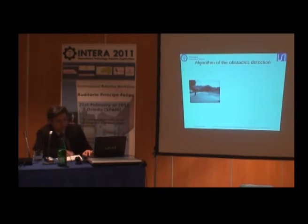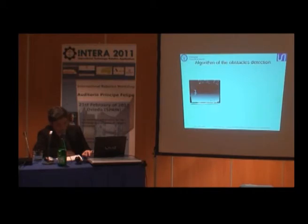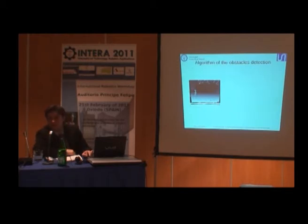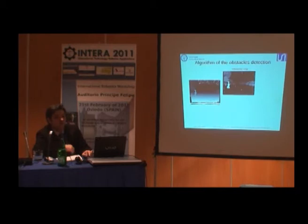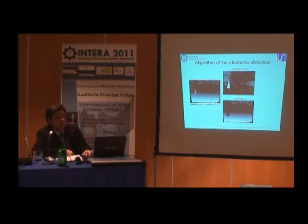Our obstacle detection follows these steps. Firstly, we have the construction of the disparity map and from it the corresponding U-disparity. In order to detect the obstacles in front of the vehicle, we first filter the U-disparity. With this information, we construct two different disparity maps. The first one is the obstacle map, where we can see the obstacles in front of the vehicle. And the second one is the free map, which is the disparity map without any obstacles.